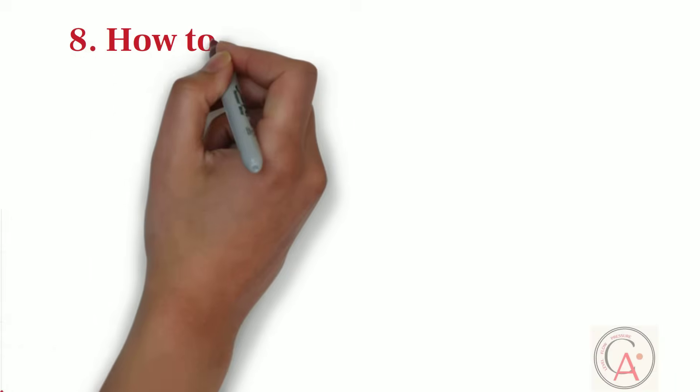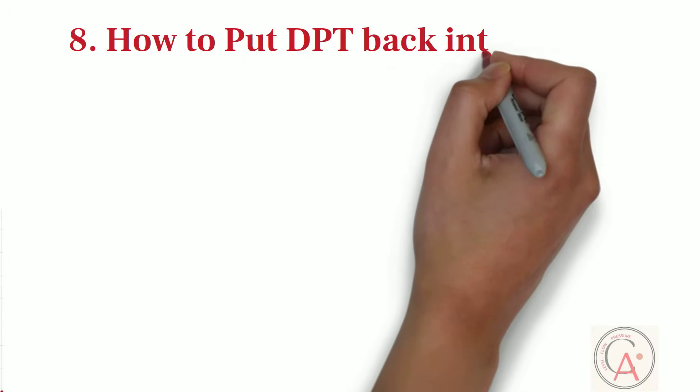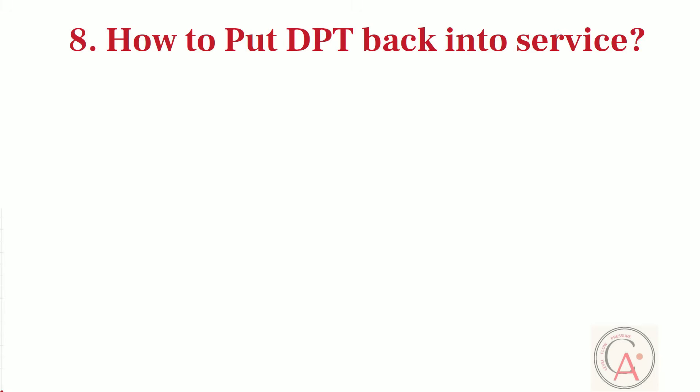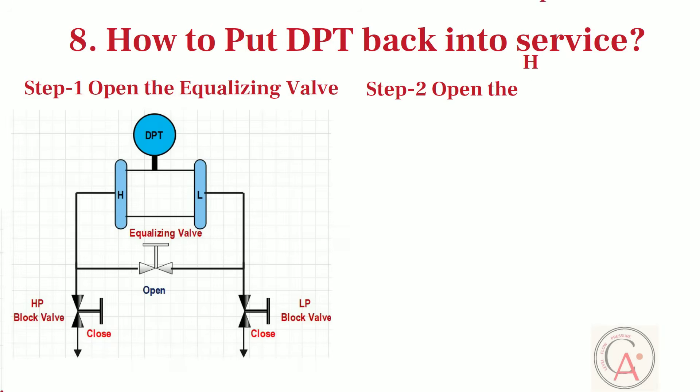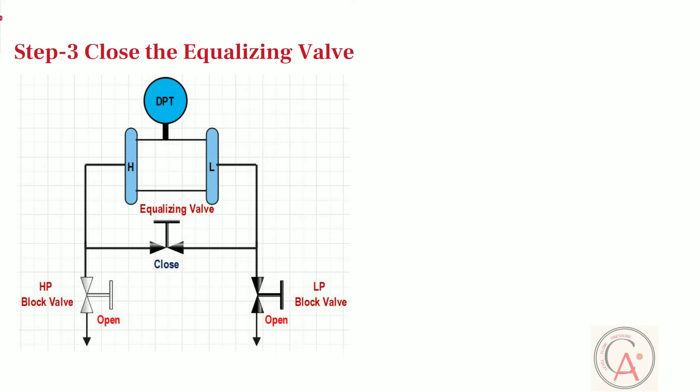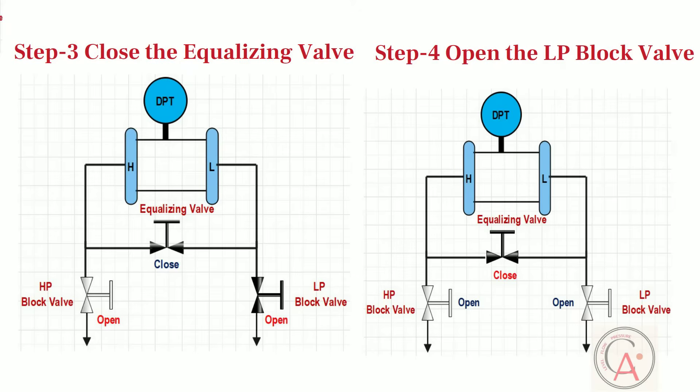Eighth question is, how to put differential pressure transmitter back into service after calibration, or after servicing of DPT. This is also one of the most important technical questions in job interview. To begin with all valves closed, and to put DPT back into service, first of all, open the equalizing valve. Secondly, open the high pressure side block valve slowly. In third step, close the equalizing valve. And finally, open the low pressure side block valve. Now, DPT is in service mode.